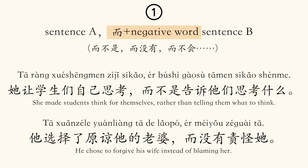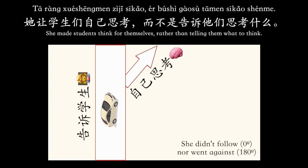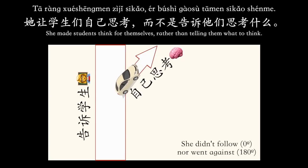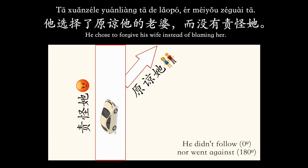In this case, 而不是 and 而没有 etc. can be translated as 'instead' or 'rather than.' Do you still remember the superhighway metaphor? If she follows the main road — what people usually do — she would tell students what to think. But she takes the second road: she made students think for themselves. Similarly, if he followed the main road, he would do what was expected — to blame his wife. But instead, he chose the second road: 原谅她的老婆.